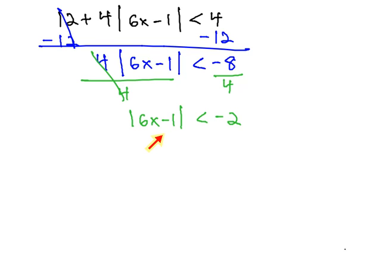The absolute value is less than a negative number. Recall, absolute value gives us the distance from zero. Absolute value is always positive. How often is a positive number less than negative 2? A positive number cannot be less than a negative number. This does not make sense.